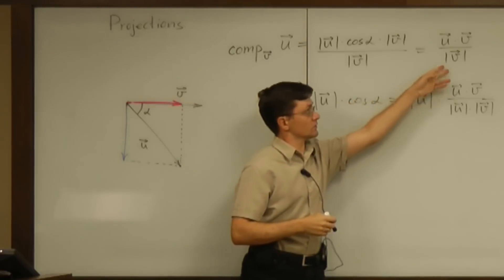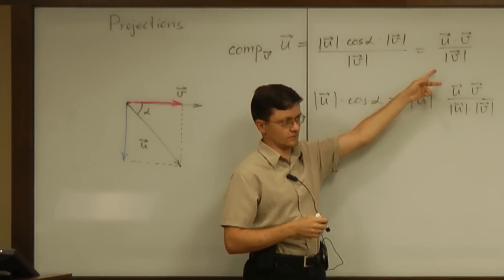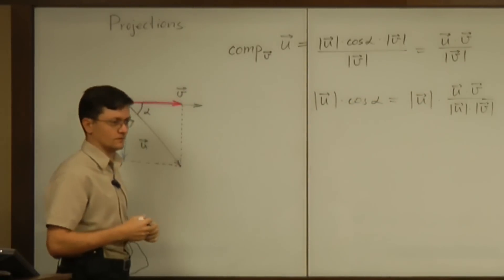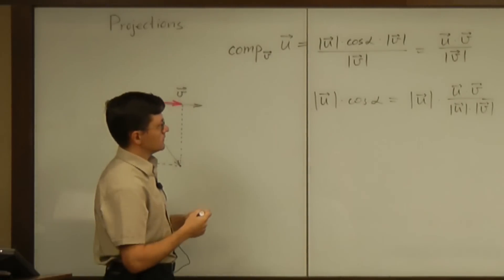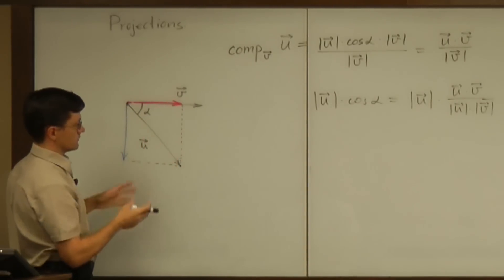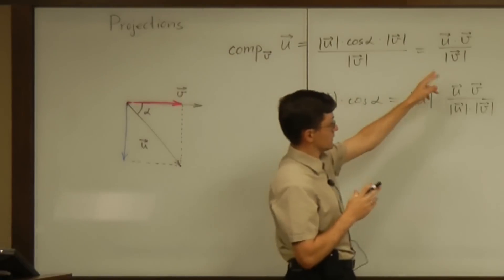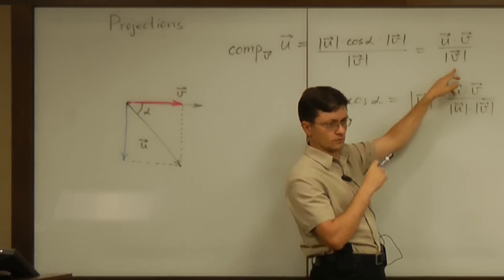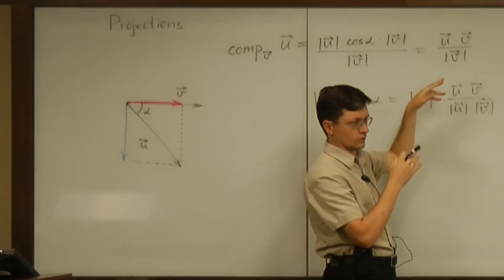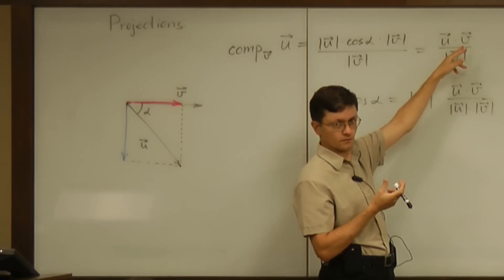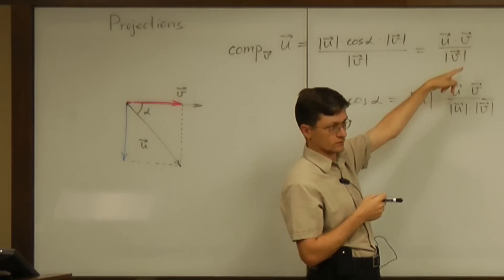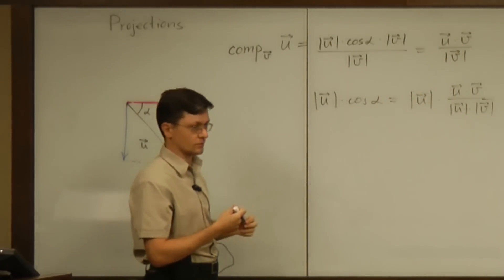So basically this is the formula that I suggest you memorize, and you will use it a lot this semester. Now let's talk a little about that formula. First of all, that's a number. Although the whole thing contains a lot of vectors, the numerator is a dot product of two vectors resulting in a number. The denominator is the magnitude, which is a number again.